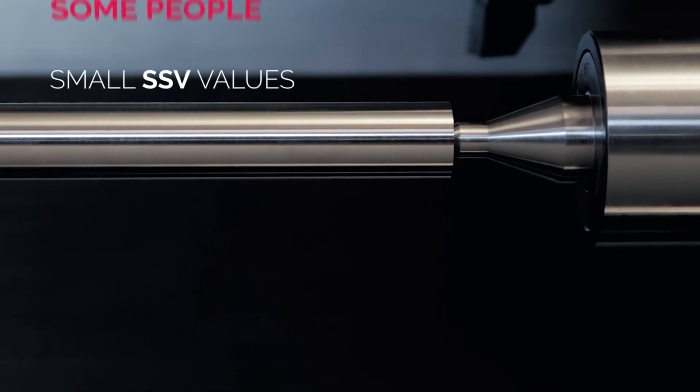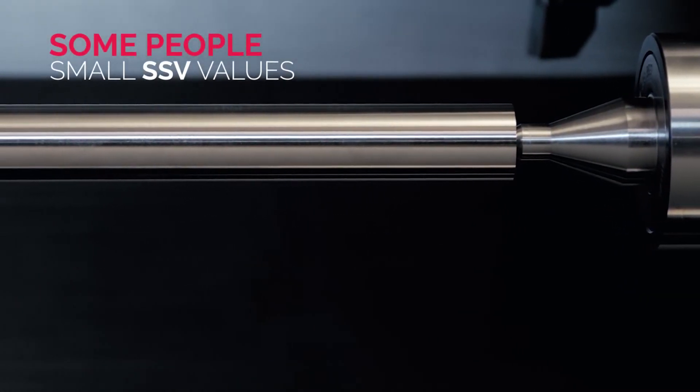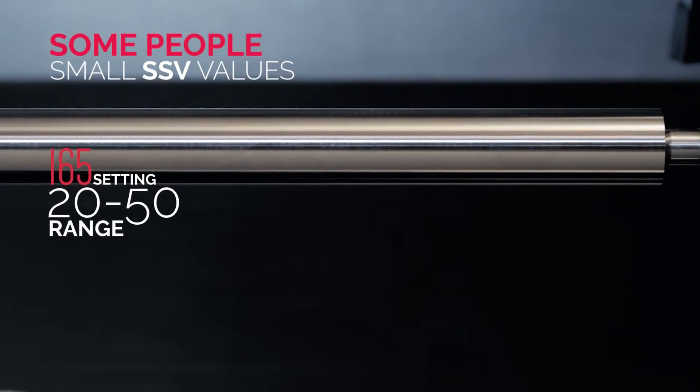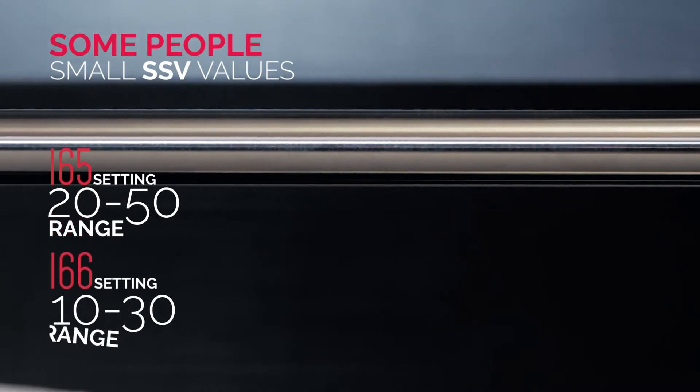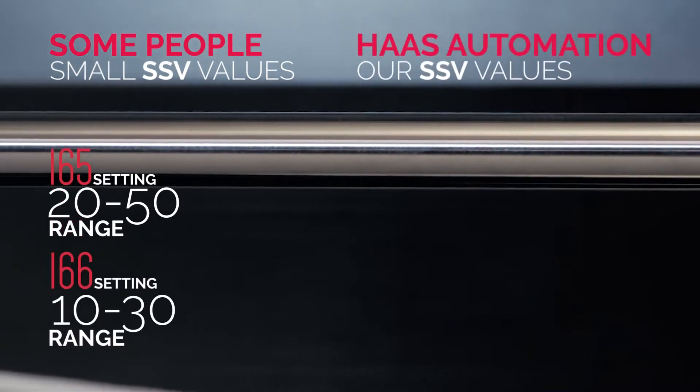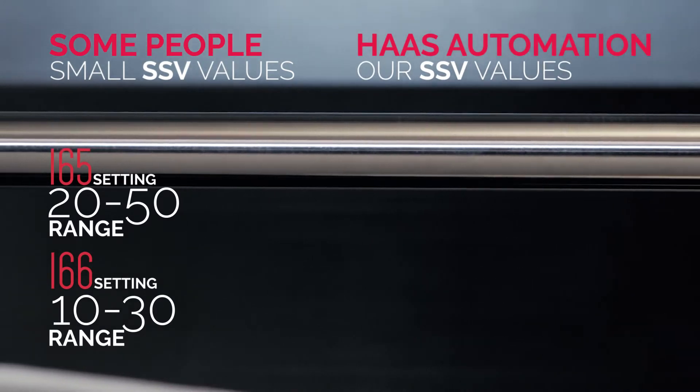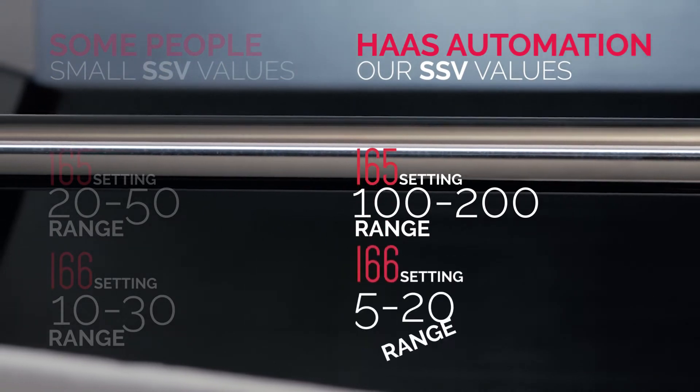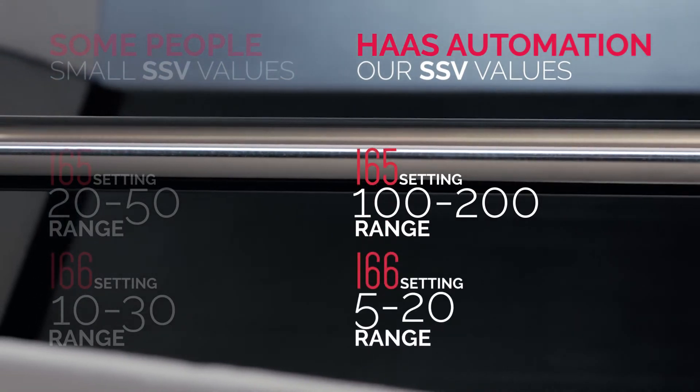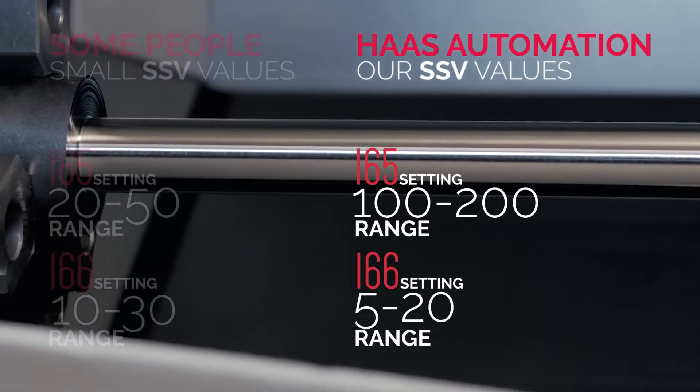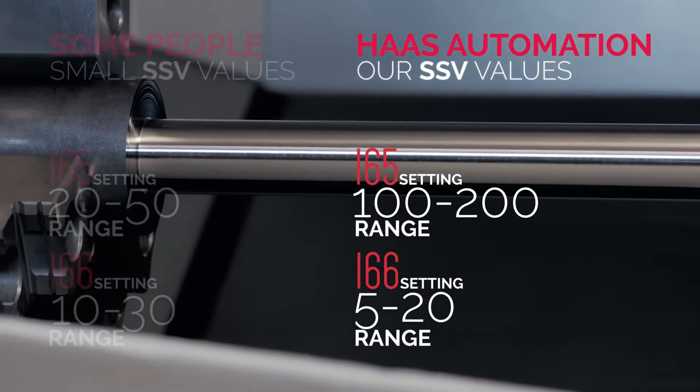Some people like to run with smaller values than we do here, like a 165 value in the 20 to 50 range, combined with setting 166 numbers between 10 and 30. But here at Haas, we've found that the best starting point for these two numbers is a setting 165 value between 100 and 200 RPM, combined with a setting 166 period value between 5 and 20. Some experimentation will probably be necessary to find the best values for your particular part.